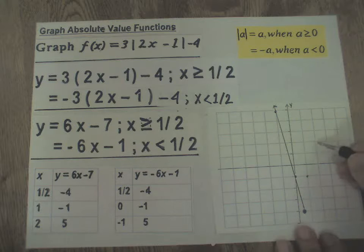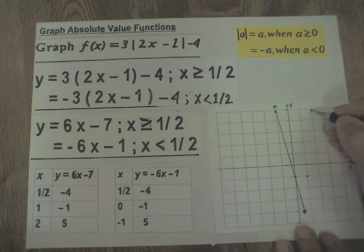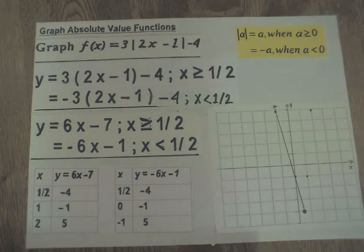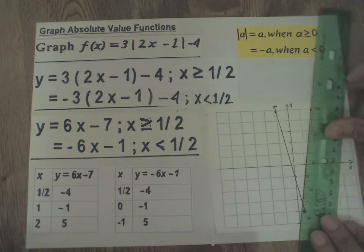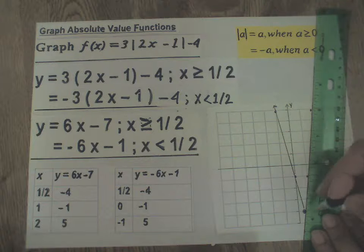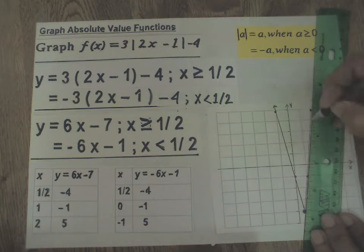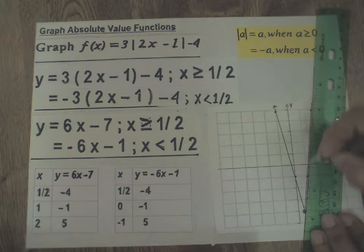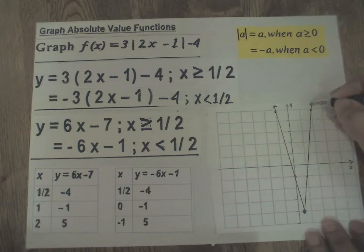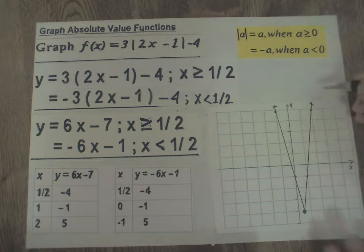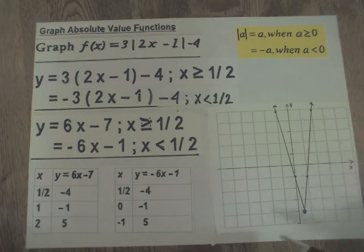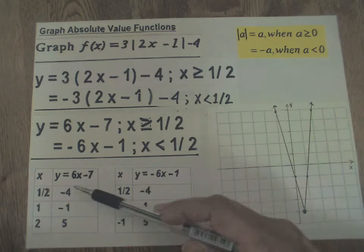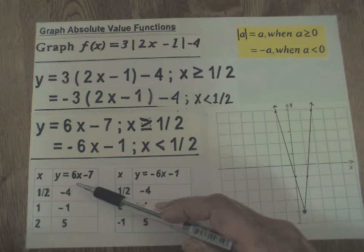Then 1, -1 right over there. 2, 5. 3, 4, 5.